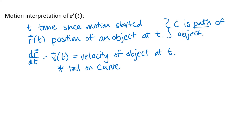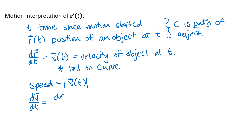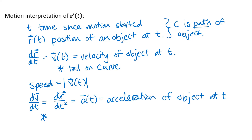Velocity is the rate of change of position with respect to time. If you just want to know how fast or slow something is moving, that's speed — the magnitude of the velocity vector, which is a scalar quantity. The derivative of the velocity vector with respect to time — or the second derivative of position — gives acceleration. The acceleration vector is also usually drawn with its tail on the curve, because velocity and acceleration describe how the object is moving at a particular point.